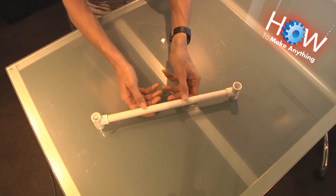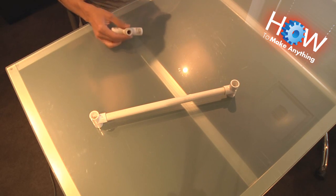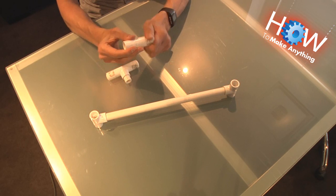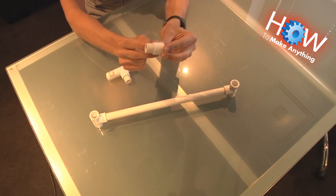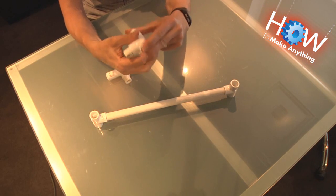So you've got your base, essentially. Now you're going to want to build your feet so you can set the thing on the ground. These are constructed out of a T-joint and two end caps with little pieces of insert in between so it just barely fits into the T-joint, on either end.